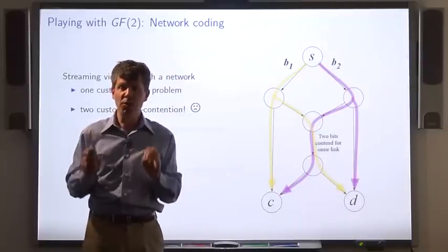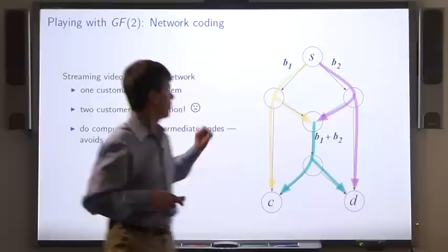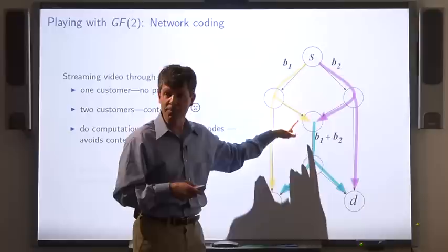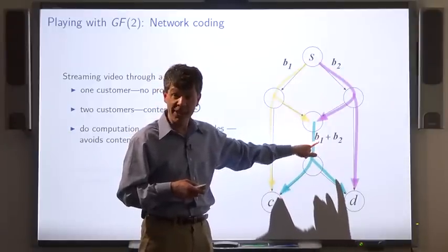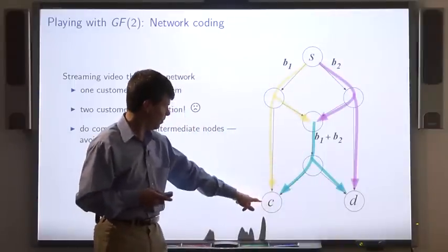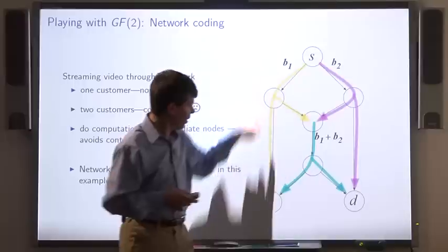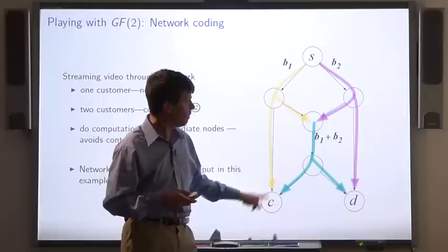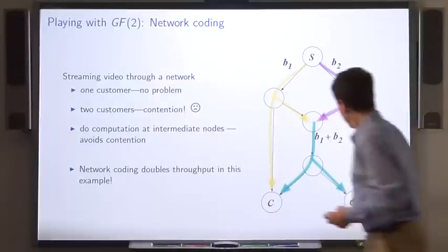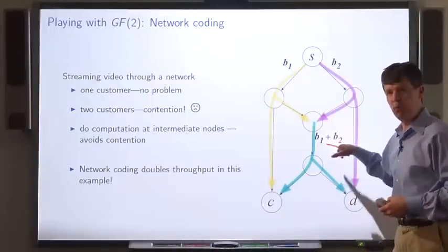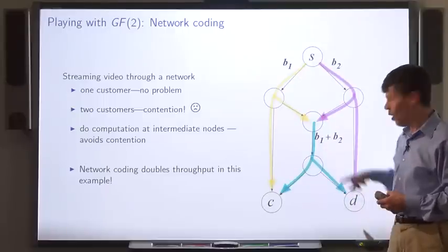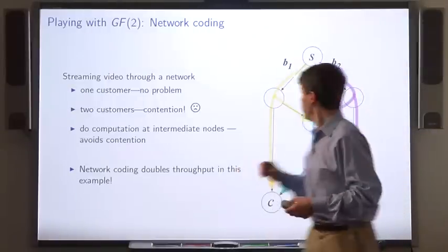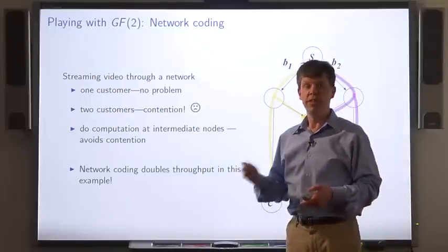Instead, we require the network itself to do a tiny bit of computation. So at this point in the network, the two bits of the stream are added together using the addition rule for GF2. Now at this point, this recipient gets the bit B1 and the bit B1 plus B2. This recipient can obtain B2 by subtracting B1 from the sum. This recipient gets the bit B2 and the bit B1 plus B2. So you can obtain the bit B1 by subtracting B2. So you see, in this case, you can effectively double the throughput from this source to these two recipients using GF2 addition.